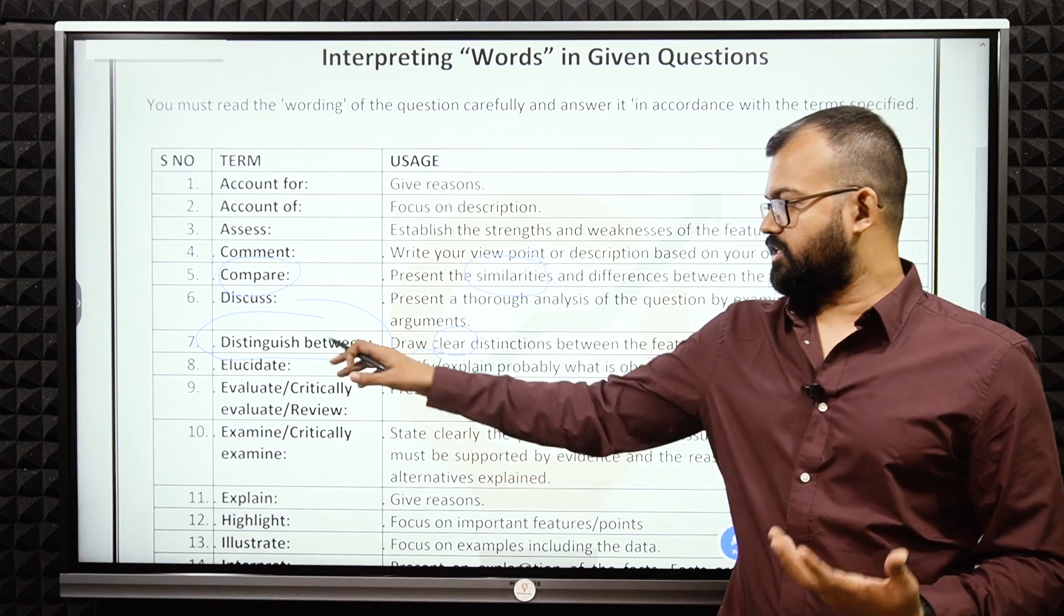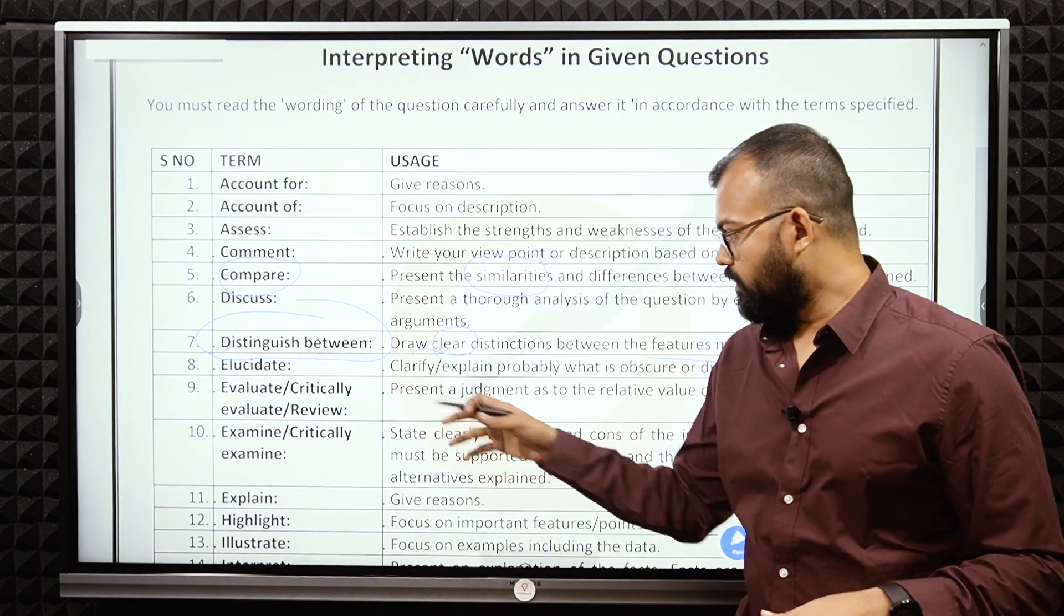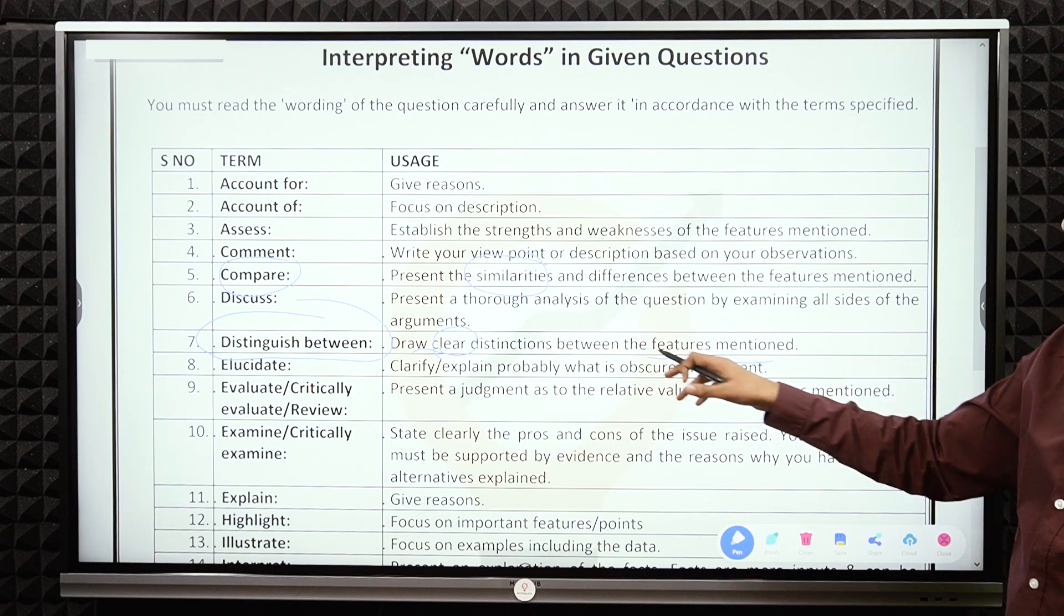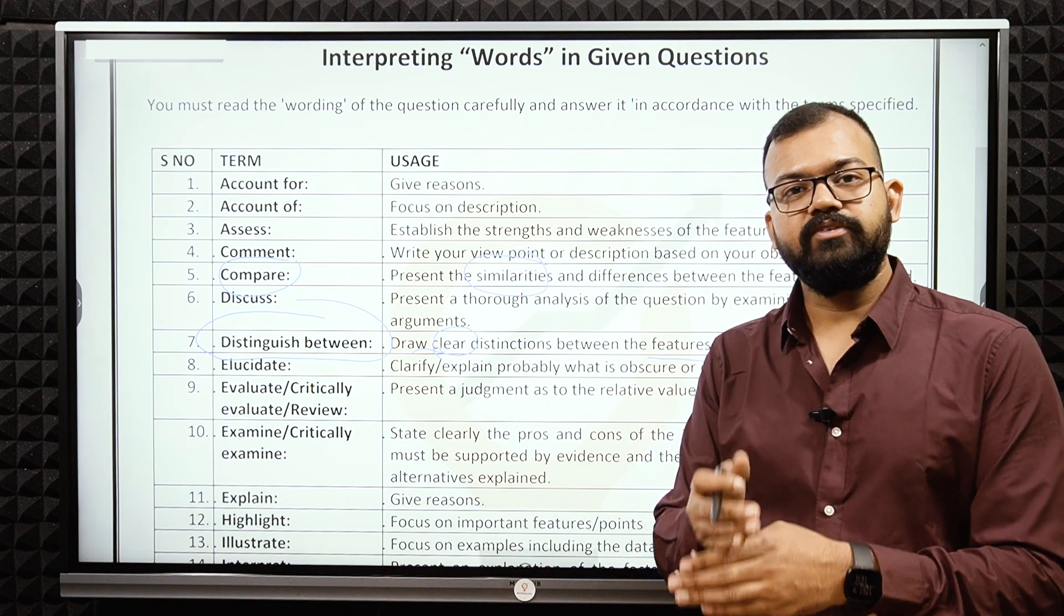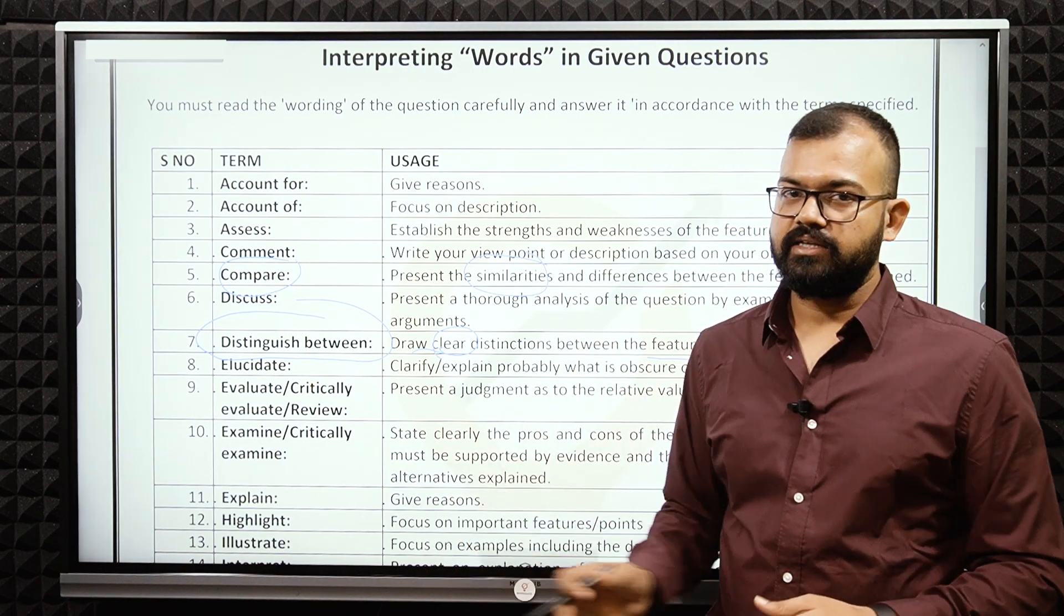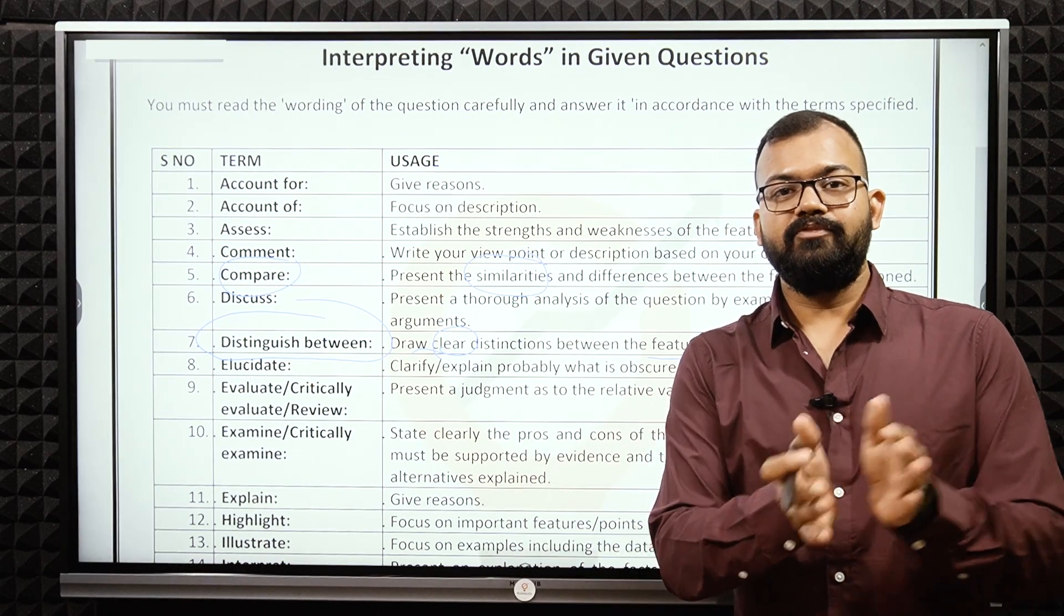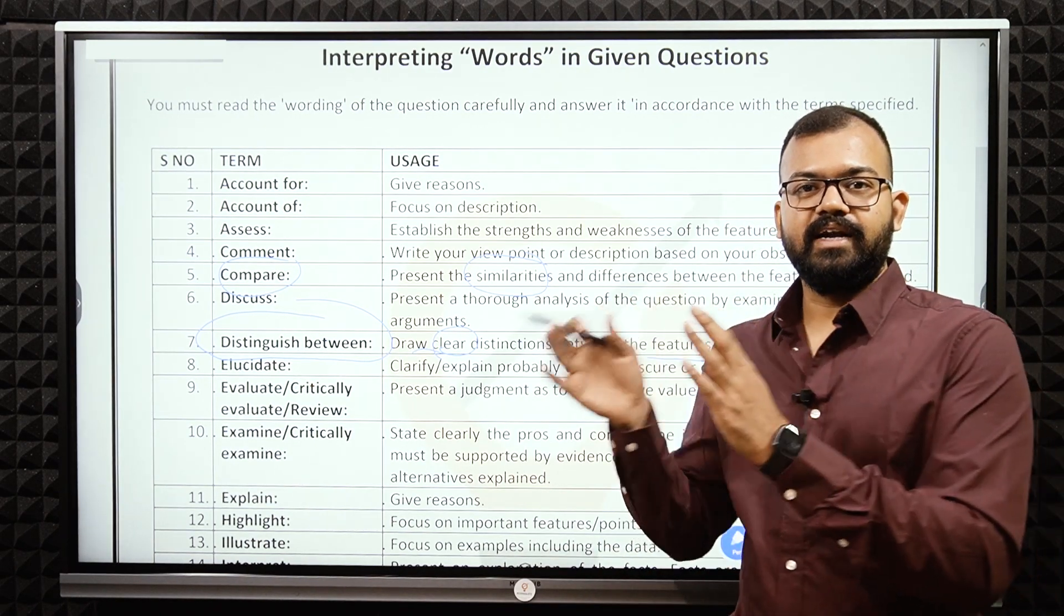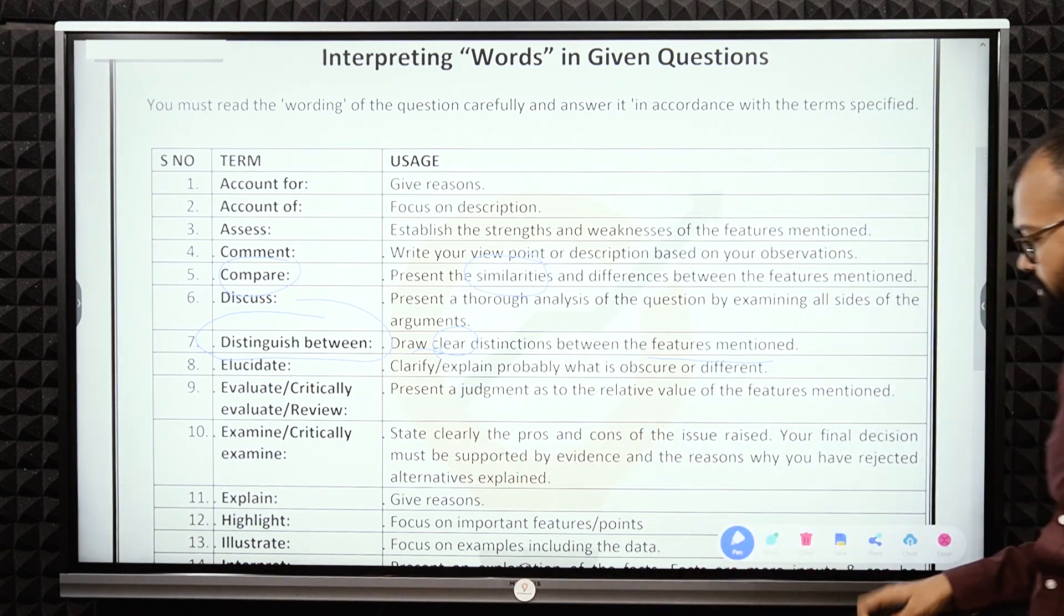For example, distinguish between the ideologies followed by USA and USSR during the Cold War. Draw clear cut distinction between the features mentioned. Like the difference in the poverty line given by Tendulkar committee and the Rangarajan committee. Distinguish between before 1991 period and after 1991 period, closed economy, open economy.